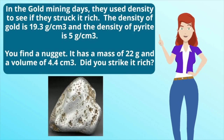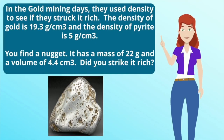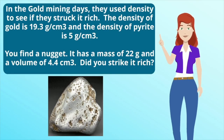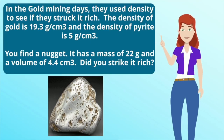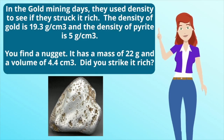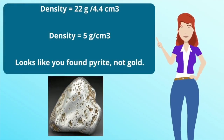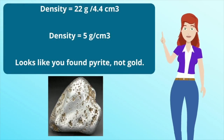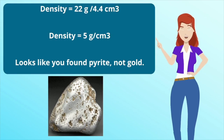In the gold mining days, they used density to see if they struck it rich. The density of gold is 19.3 grams per centimeters cubed, and the density of pyrite is 5 grams per centimeters cubed. You find a nugget. It has a mass of 22 grams and a volume of 4.4 centimeters cubed. Did you strike it rich? Well, density equals 22 divided by 4.4, so the density equals 5 grams per centimeters cubed. Looks like you found pyrite, not gold.